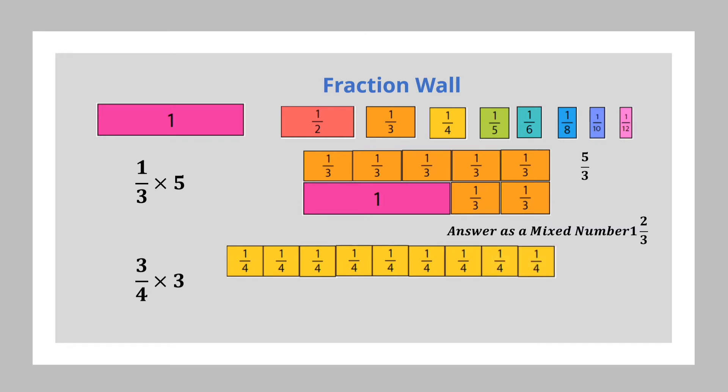And this would be a total of nine quarters. So that we can see three quarters times three is nine quarters. Again, we can change this into a mixed number by aligning it to the whole.